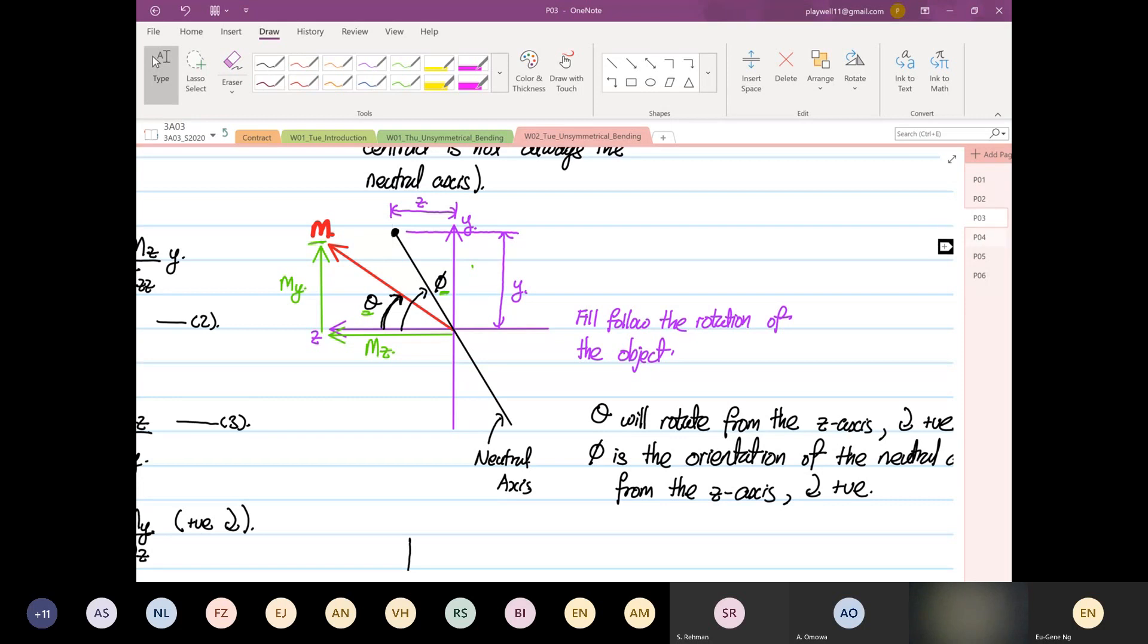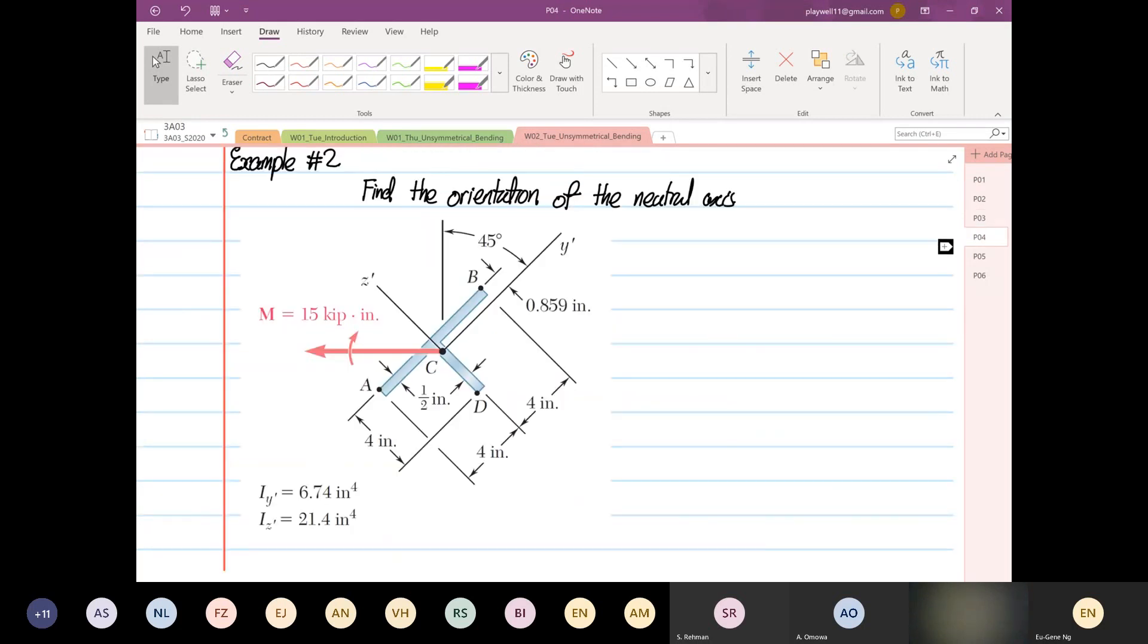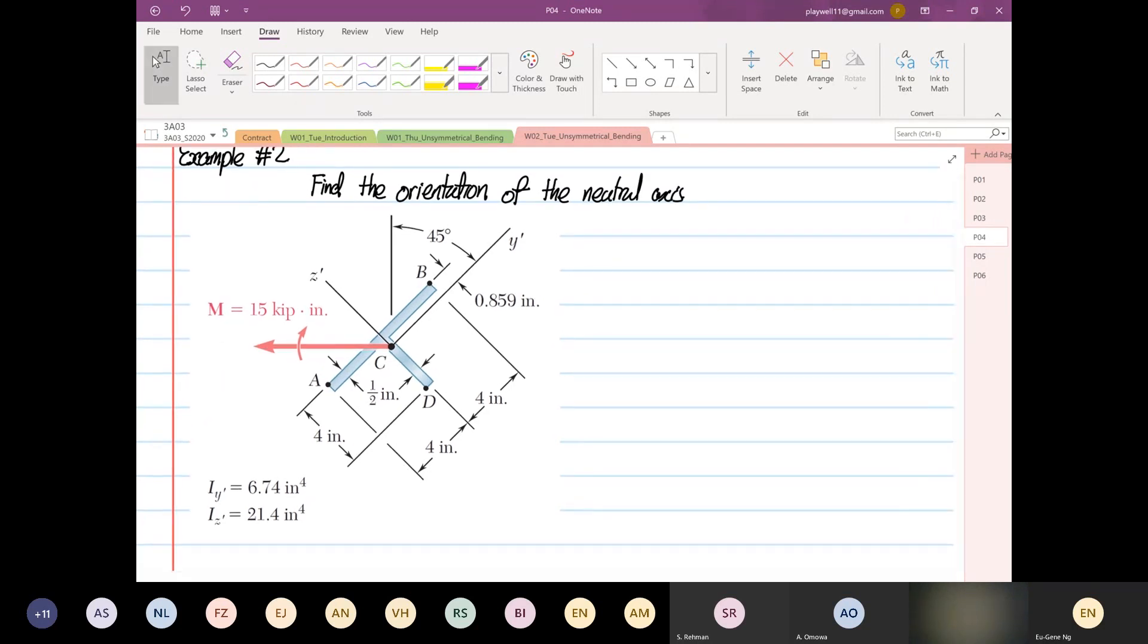Right. So we're going to find the orientation of the neutral axis. So we know what we see now is we know that we have a Iy prime.